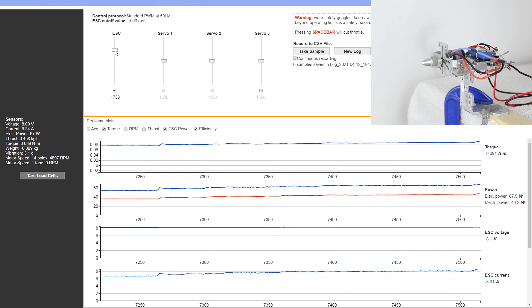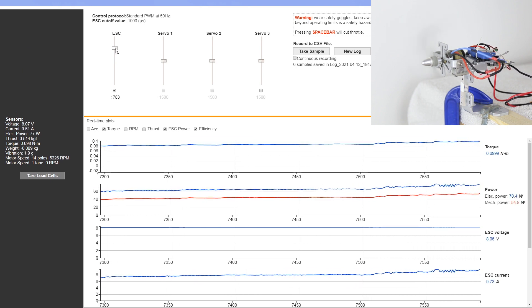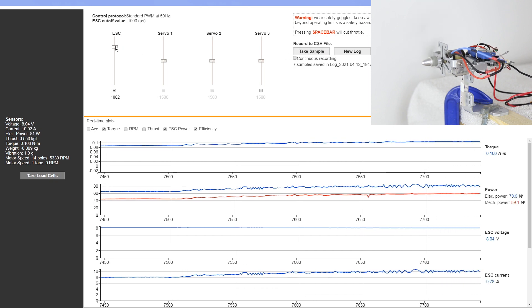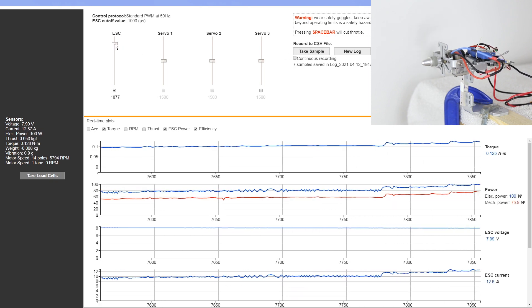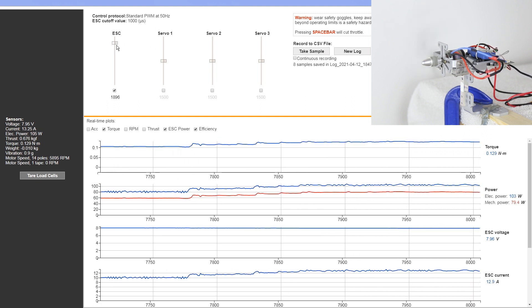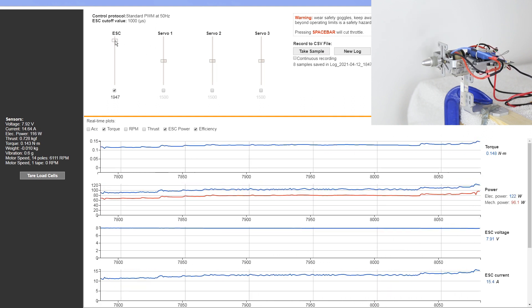We're going to ramp all the way up to maximum throttle and then we're going to take two data points. Then we're going to start to ramp back down in throttle so that we're able to make a valid comparison between the voltage that we see as we go up versus the voltage that we see as we go back down in the ramping cycle.